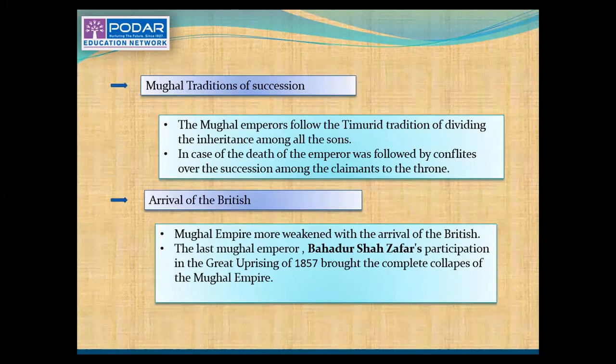The next point is the Mughal tradition of succession. From the period of Humayun to Aurangzeb, the Mughals were getting success one by one and captured almost all parts of India. This was the time of the Timurid tradition of dividing the inheritance among all sons. But in the case of a dying emperor, this was followed by conflicts over succession among claimants to the throne.